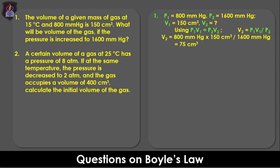Question 2: A certain volume of a gas at 25°C has a pressure of 8 atm. If at the same temperature, the pressure is decreased to 2 atm and the gas occupies a volume of 400 cm³, calculate the initial volume of the gas.